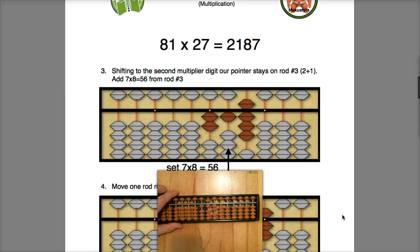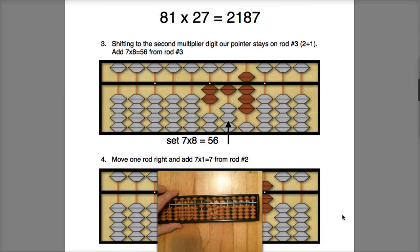Now we're going to shift to the second multiplier digit 7. In this case, we will keep our pointer here because in effect we have three digits for our starting location. We'll take 7 times 8, which is 56, and we'll enter 56 from this location. That gives us this interim sum of 218.